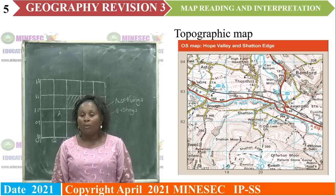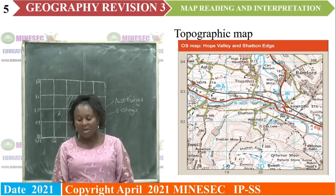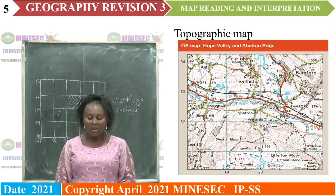The topographic map has four main elements. We have the title, like what we have on our screens. The title of this map is Ordnance Survey Map of Hope Valley and Chatton Edge.